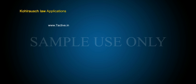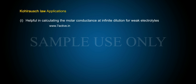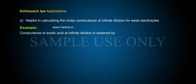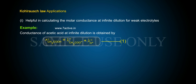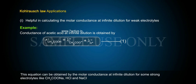The applications of Kohlrausch's Law are: Application 1 — it is helpful in calculating the molar conductance at infinite dilution for weak electrolytes. For example, the conductance of acetic acid at infinite dilution is obtained by: Λ∞(CH₃COOH) = λ∞(CH₃COO⁻) + λ∞(H⁺) — Equation 1. This equation can be obtained from the molar conductance at infinite dilution for some strong electrolytes.